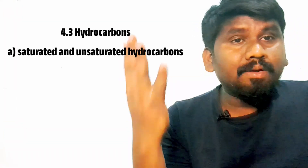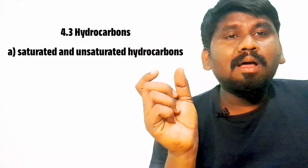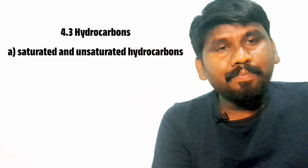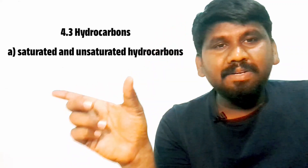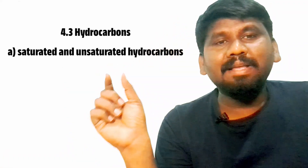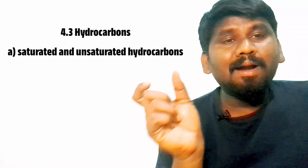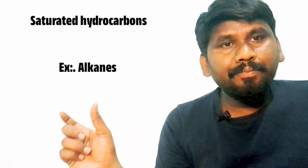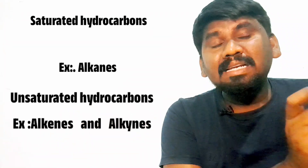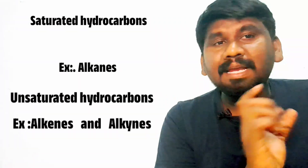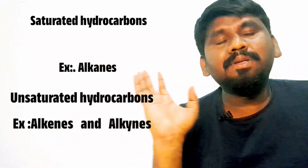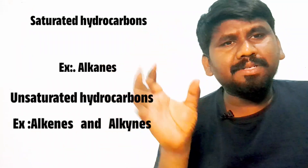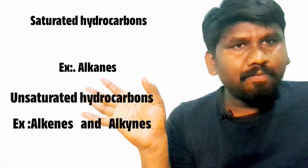The fourth topic is hydrocarbons. You should know what is called a hydrocarbon and the classification of hydrocarbons. Mainly, hydrocarbons are classified as saturated and unsaturated. Under saturated they give alkanes; under unsaturated they give alkenes and alkynes, and their structures. You should know the structures of these alkanes, alkenes, and alkynes — only basic structures up to 5 or 6 compounds is enough.